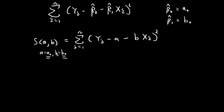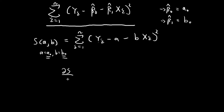Since A0 and B0 are values that minimize this function, by setting the estimates equal to these two values, these estimates will be values such that this expression is minimized — which is what we want. So in order to find A0 and B0, we're going to consider the partial derivative of S with respect to A, and then set this equal to 0.